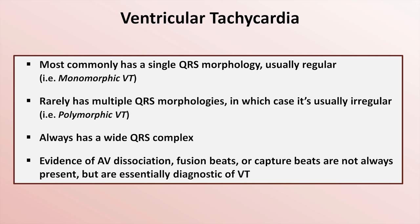For those unfamiliar with AV dissociation, this refers to the situation in which the atria and ventricles are not communicating with one another. On EKG, this is evident as P-waves and QRS complexes occurring at different rates, appearing completely independent of one another. AV dissociation is much better seen in complete heart block, and even when present in VT, it is usually only a rare dissociated P-wave visible between the wide, rapid QRS complexes.